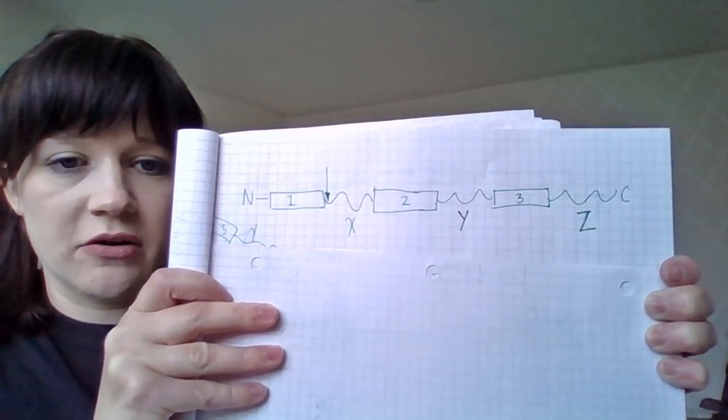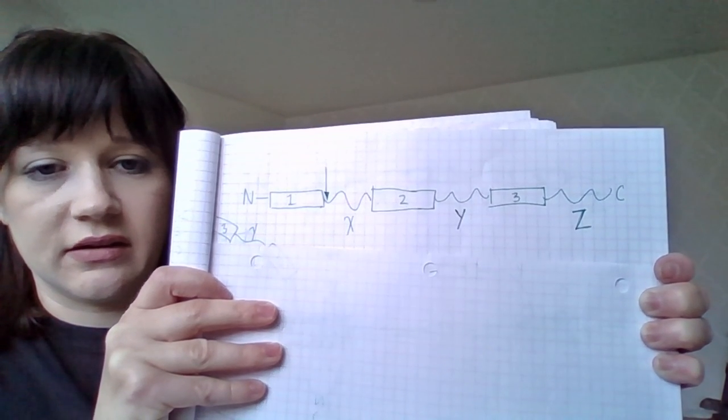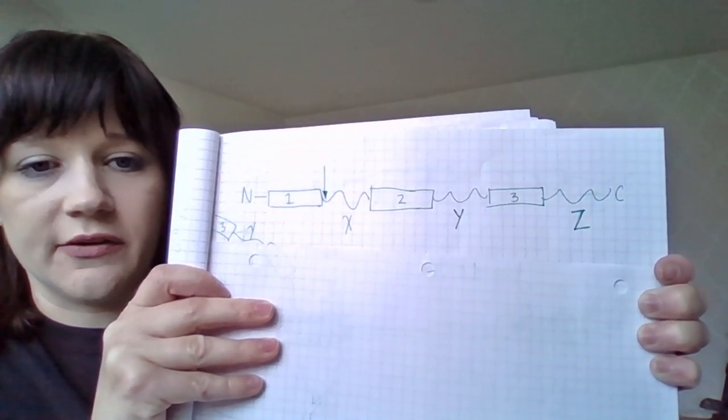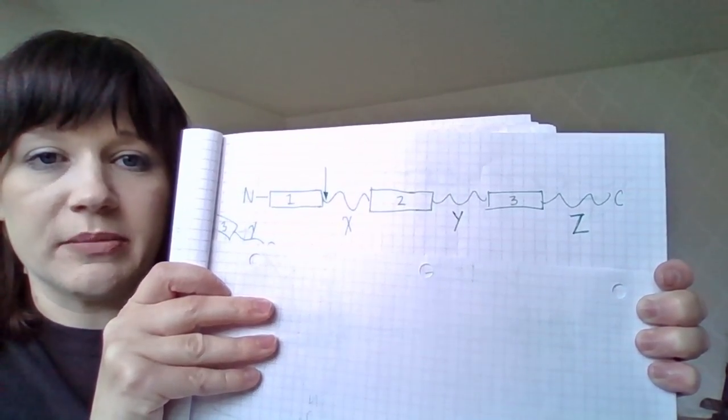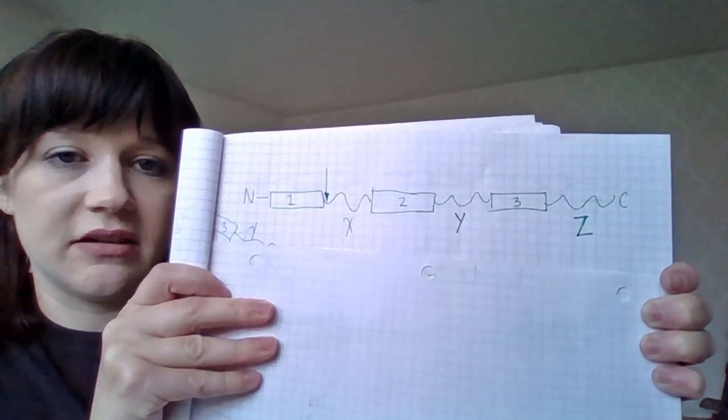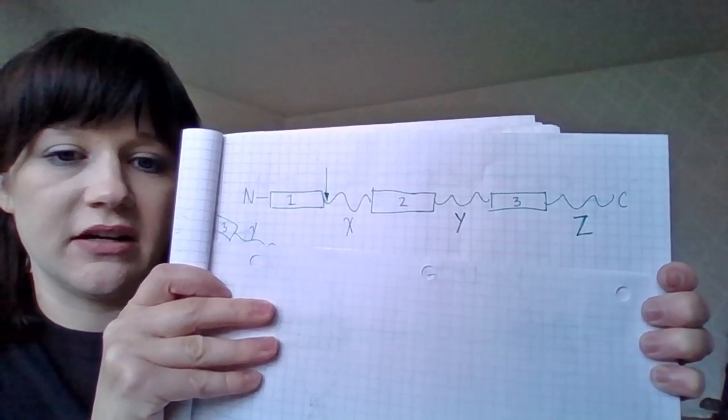Now we have an arrow that's indicating where a signal peptidase would act. And so that's telling us that region one is the signal peptide. And we know that the signal peptide is going to get inserted first.